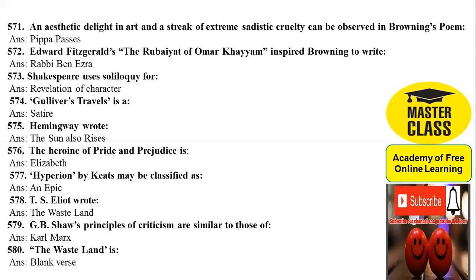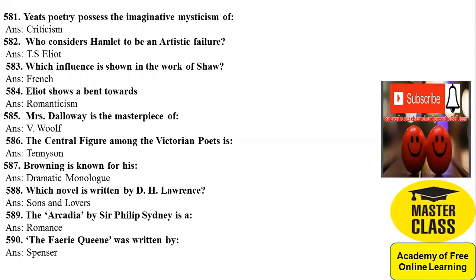578: T.S. Eliot wrote The Waste Land. 579: G.B. Shaw's principles of criticism are similar to those of Karl Marx. 580: The Waste Land is written in blank verse form. 581–582: Who considers Hamlet to be an artistic failure? It is T.S. Eliot who considered Hamlet an artistic failure. 583: Which influence is shown in the work of Shaw? Answer is French.